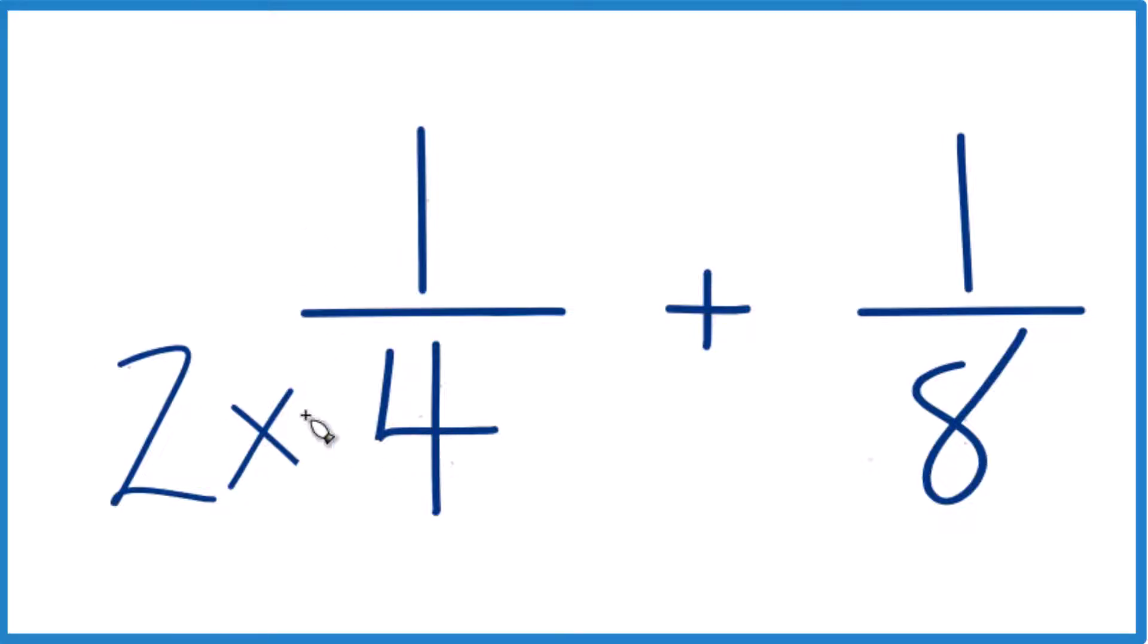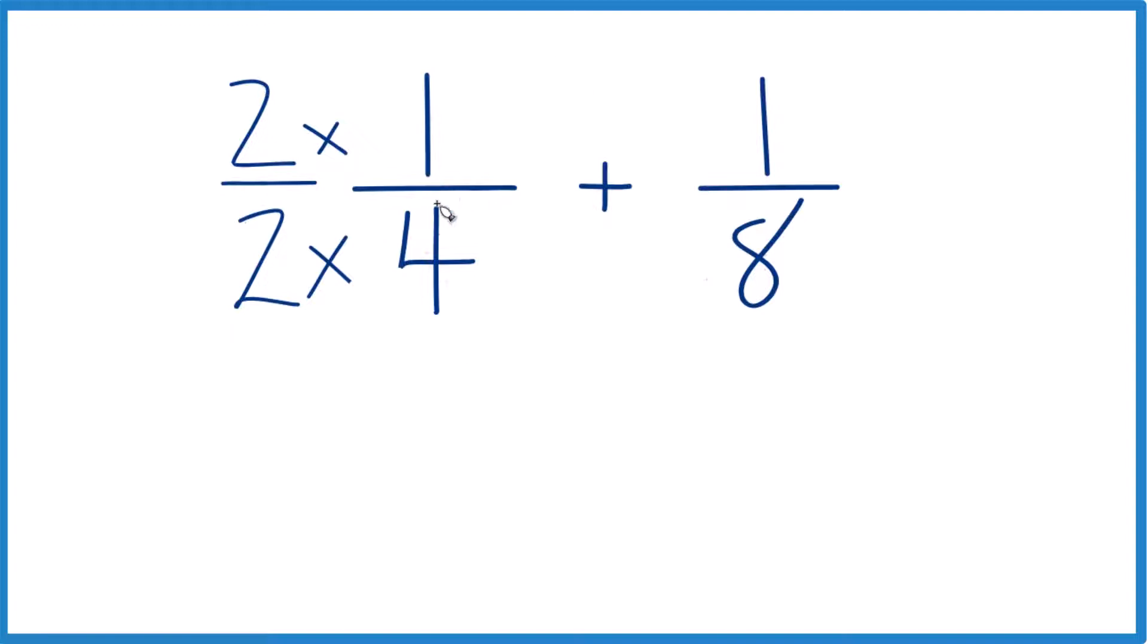We can't just multiply 2 times the denominator. We need to also do the same thing to the numerator. That's because 2 over 2, that's just 1. So we don't change the value, just the way it's represented.